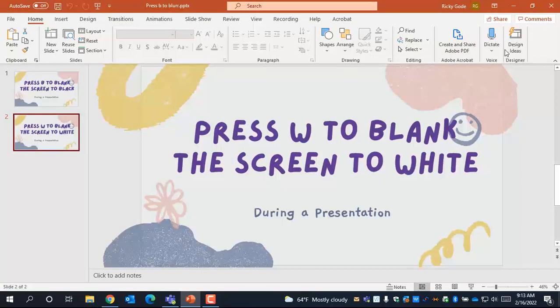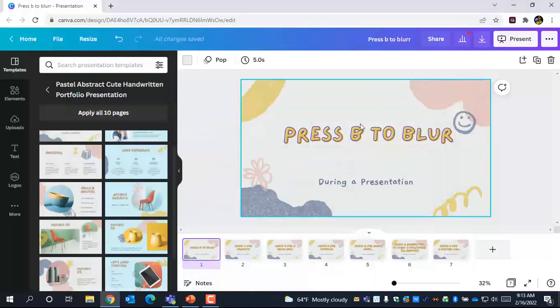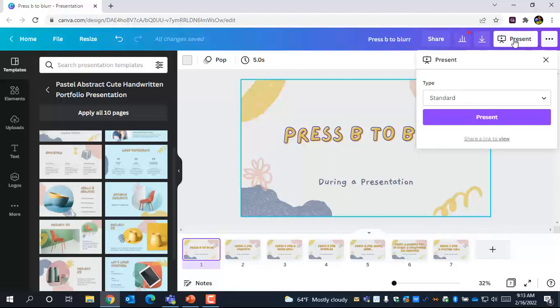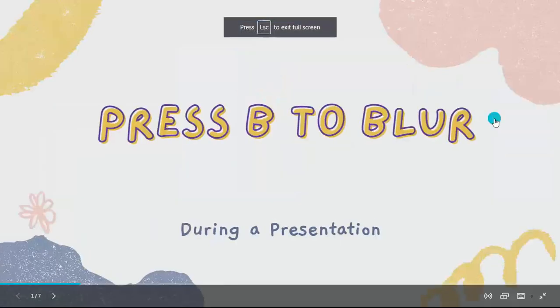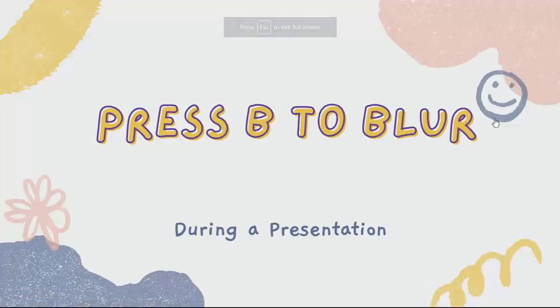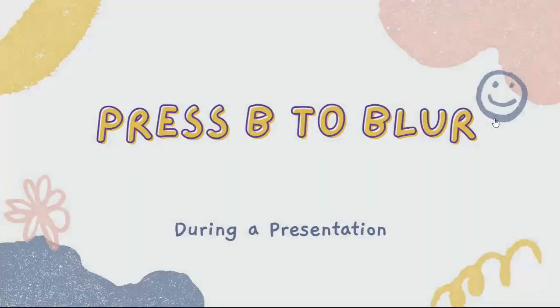Canva has this also, but they take it to level 11. Canva can also have presentations. Here's a presentation I made really quickly. When I press the letter B in Canva during a presentation, instead of it going to blank, it blurs out the presentation. That way it takes focus off of the presentation and onto something maybe that you have to say. If I want to stop blurring it, I hit the letter B again.